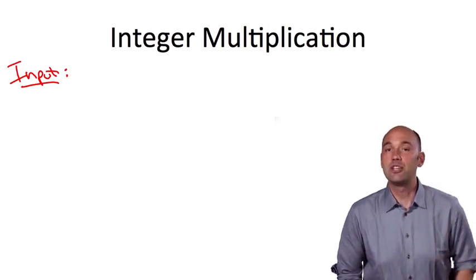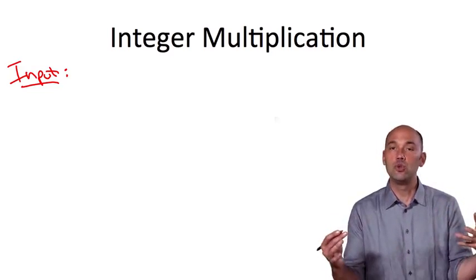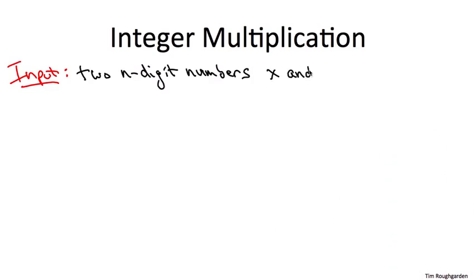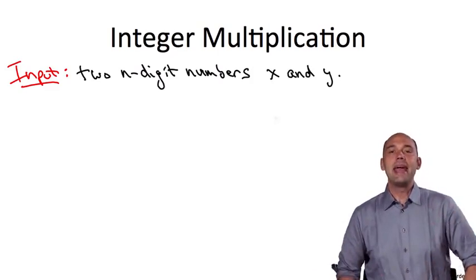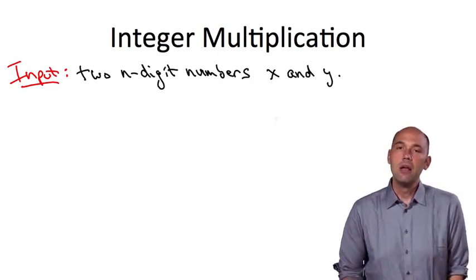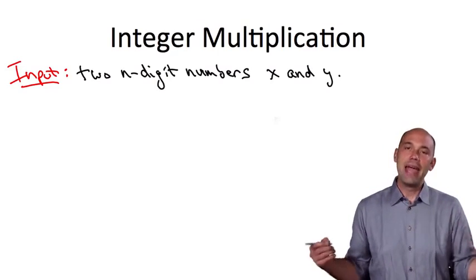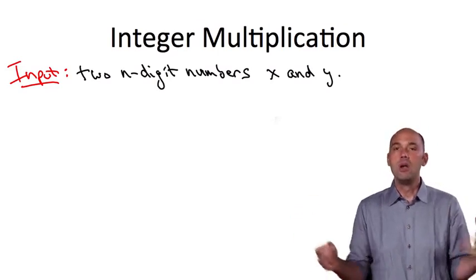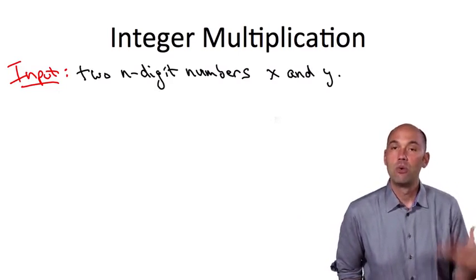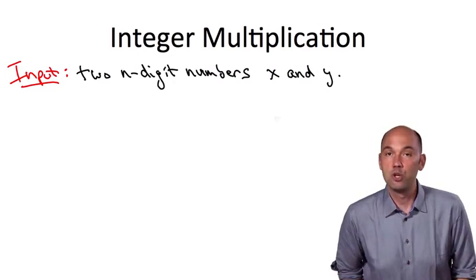For the integer multiplication problem, the input is just two n-digit numbers. The length n of the two input integers x and y could be anything, but for motivation, you might want to think of n as large, in the thousands or even more, perhaps implementing some cryptographic application which has to manipulate very large numbers.